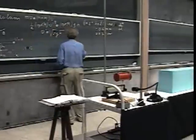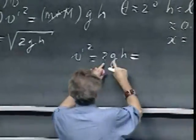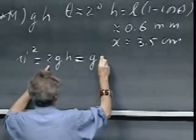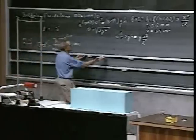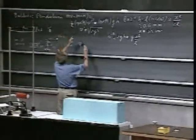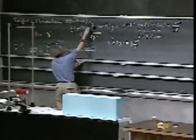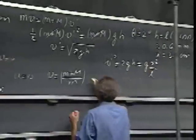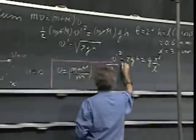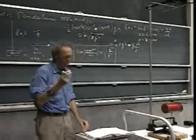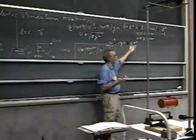In other words, v prime squared equals 2gh, which can now be replaced by approximately 2g times x squared over 2L, giving g x squared over L. So the velocity of the bullet v equals (m + M) over m times v prime, but v prime is now the square root of (g/L), so we get v equals (m + M)/m times x times the square root of g over L. We can now do quite an accurate measurement of the bullet speed because we can measure x with uncertainty of only one or two millimeters.